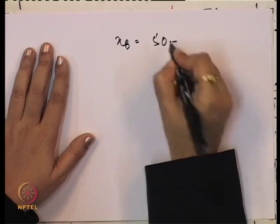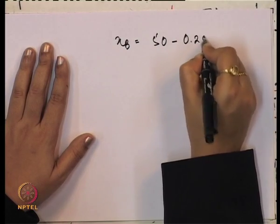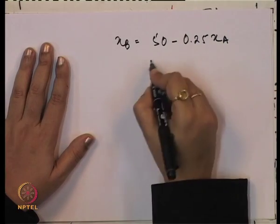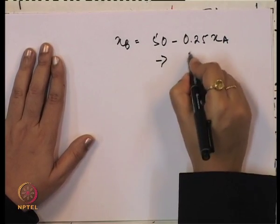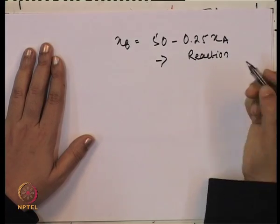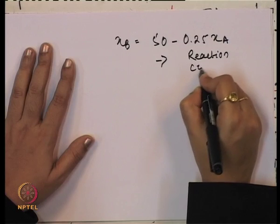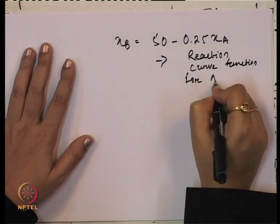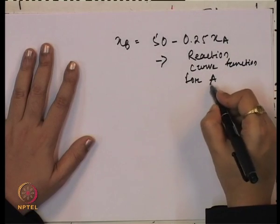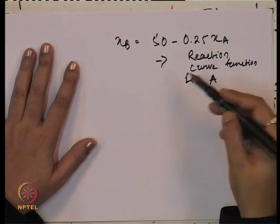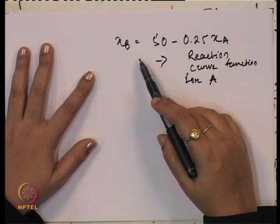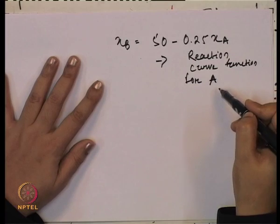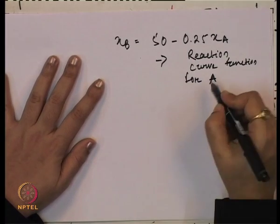Similarly, following the same formula — finding profit as total revenue minus total cost and maximizing — we get the reaction function of B: xB = 50 - 0.25xA. To find the values of xA and xB, we substitute one reaction function into the other.